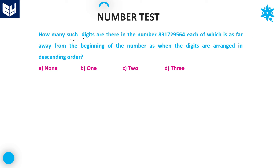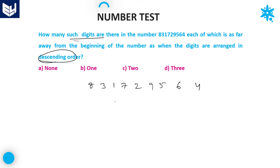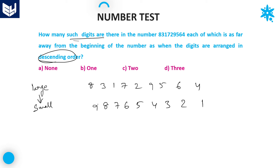Next question — also same model. How many such pairs? Descending order. First, write down the number: 8 3 1 7 2 9 5 6 4. The process is the same. Now write the given number in descending order — from the largest to the smallest, that is decreasing order. So: 9, 8, 7, 6, 5, 4, 3, 2, 1. These are the 9 digits given, and this is the descending order. Now count the number of pairs.